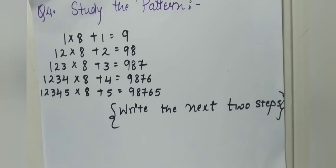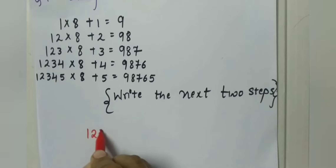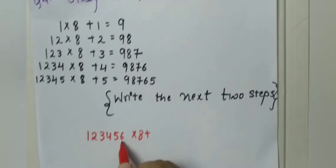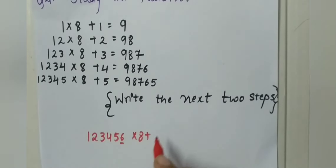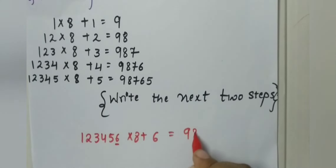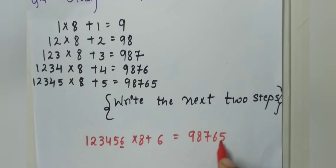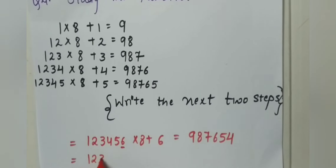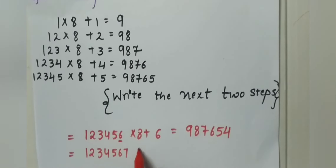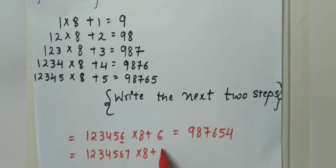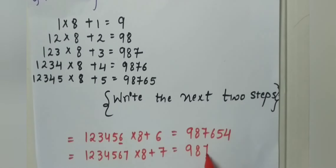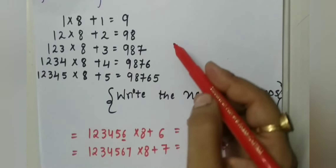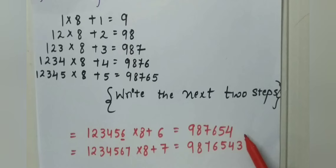After 5, the next number is 6. So we write 123456 × 8 + 6 = 987654. After 6, the next number is 7. So 1234567 × 8 + 7 = 9876543. These are the next two steps after the given pattern.